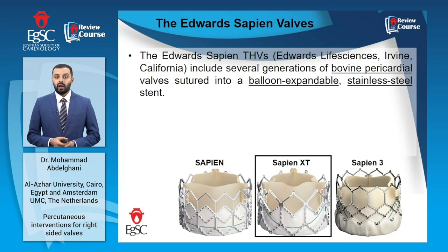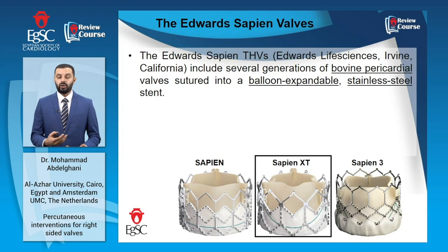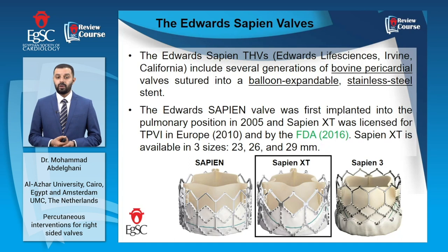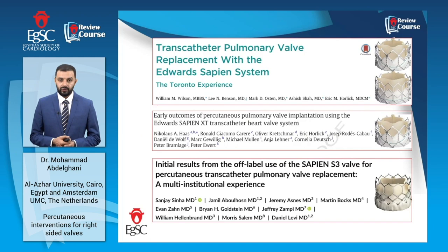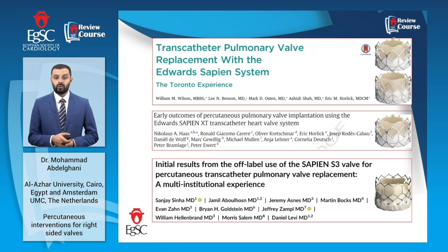Another option in transcatheter pulmonary valve implantation is the Edwards SAPIEN family of valves. These are bovine pericardial valves sutured into a balloon-expandable stainless steel stent. The Edwards SAPIEN valve was first implanted into the pulmonary position in 2005, and the SAPIEN XT was approved by the FDA for TPVI in 2016. Sizes up to 29 mm are available, and there is currently plenty of data suggesting that outcomes with the Edwards SAPIEN family of devices are quite favorable.